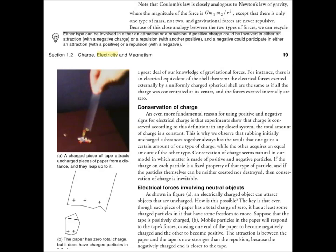Electrical forces involving neutral objects. As shown in figure A, an electrically charged object can attract objects that are uncharged. How is this possible? The key is that even though each piece of paper has a total charge of zero, it has at least some charged particles in it that have some freedom to move.